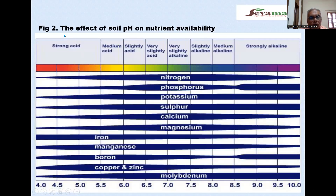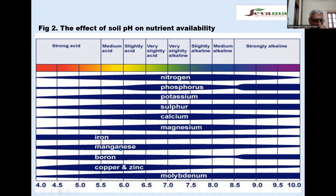Figure 2 indicates the effect of soil pH on nutrient availability. The majority of macronutrients — nitrogen, phosphorus, potassium, sulfur, calcium, and magnesium — are available at a pH range of 6.5 to 7.5. Whereas iron, manganese, boron, copper, and zinc are more available at a pH of around 5.5 to 6, compared to alkaline pH.